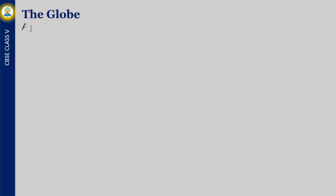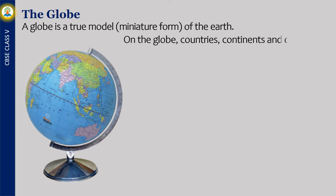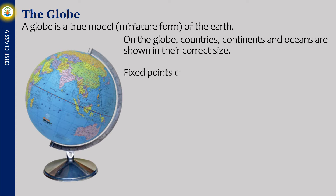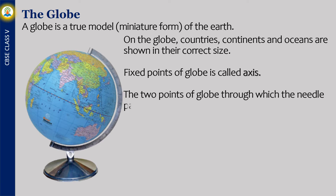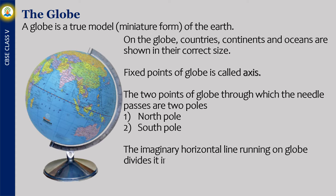A globe is a true model — a miniature form — of the Earth. On the globe, countries, continents and oceans are shown in their correct size. The fixed points of the globe are called the axis. The two points through which the needle passes are the two poles: north pole and south pole. The imaginary horizontal line running on the globe divides it into two equal parts. This line is known as the equator.